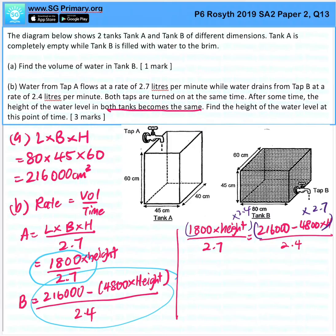Because you're bringing them over, 1800 times height times 2.4 will give me 4320 height. And then the opposing side is 583200 minus 12960 height.